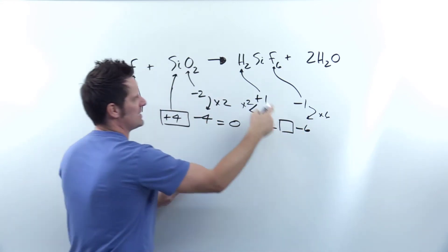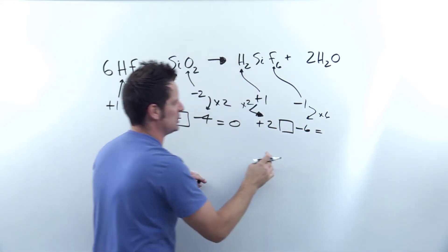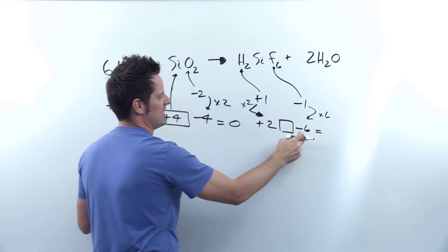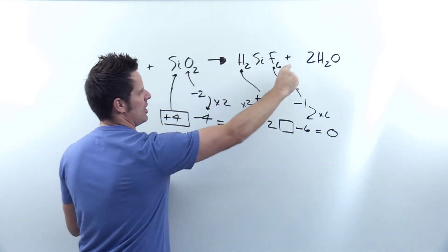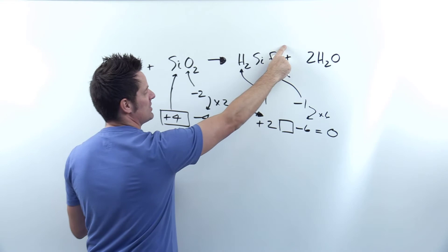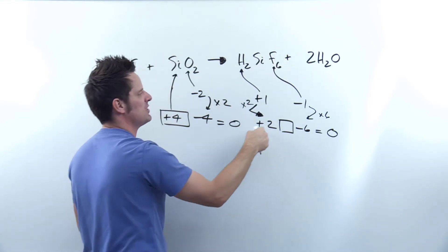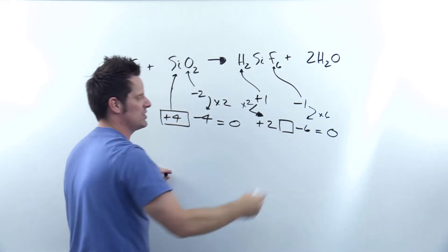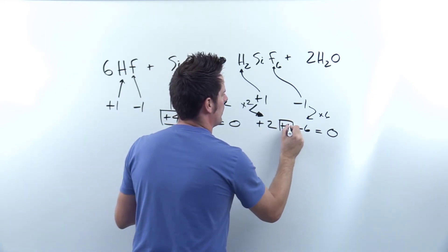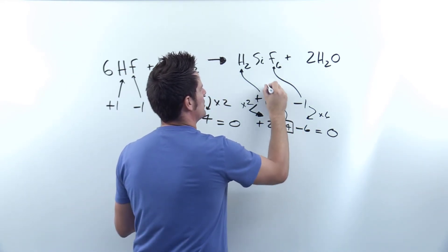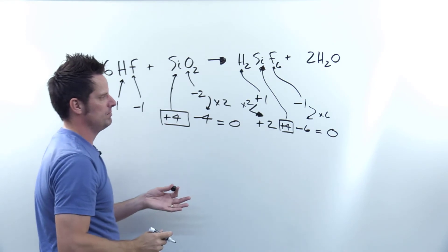The number for silicon must be something such that when added to +2 and -6 equals zero, because the total charge for this entire compound is zero. Something plus two minus six equals zero — that's +4. So silicon here is also +4.